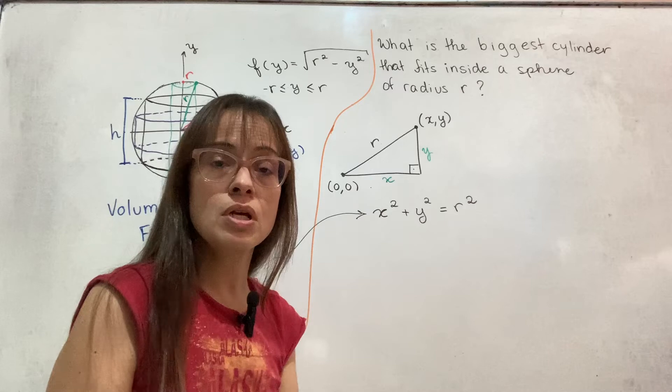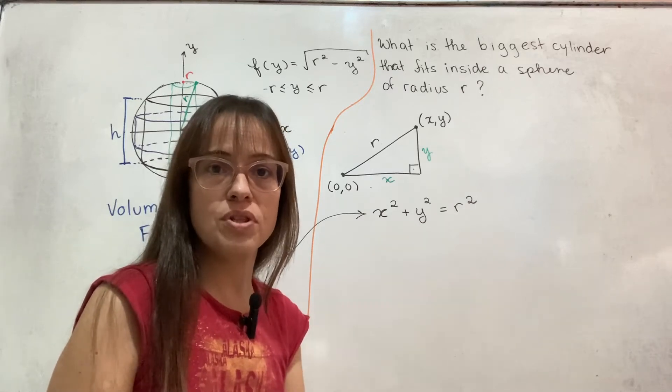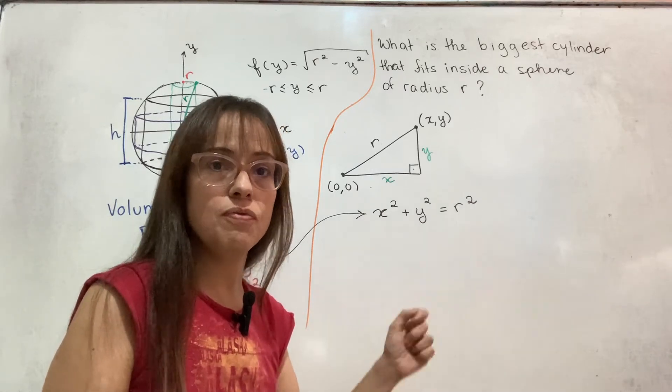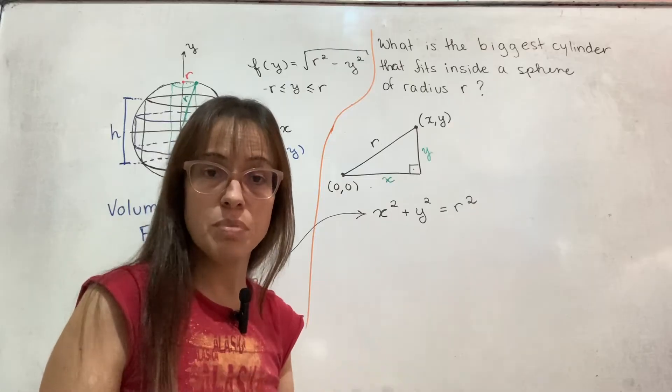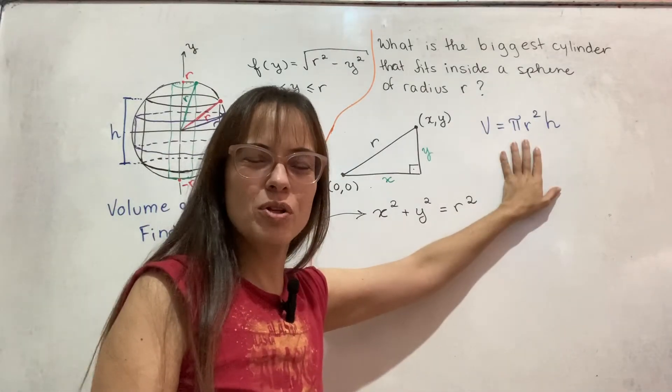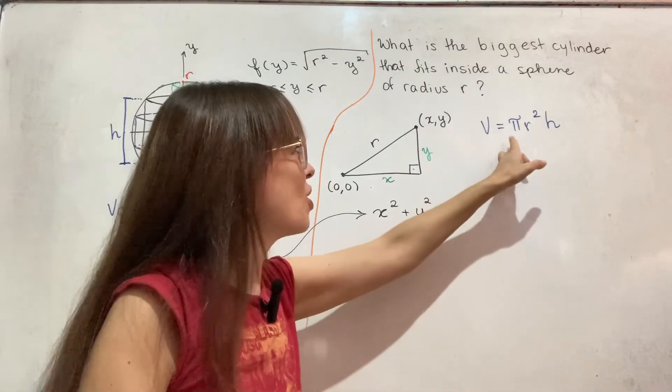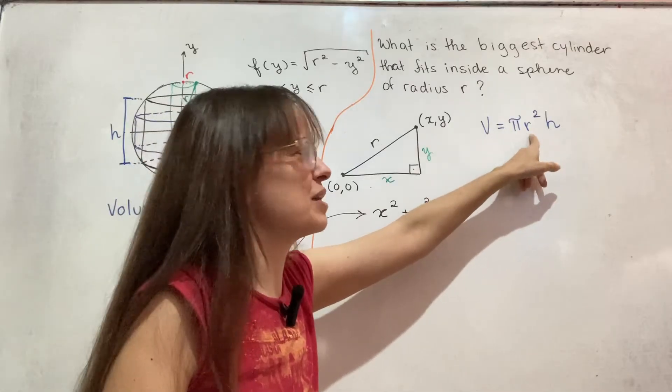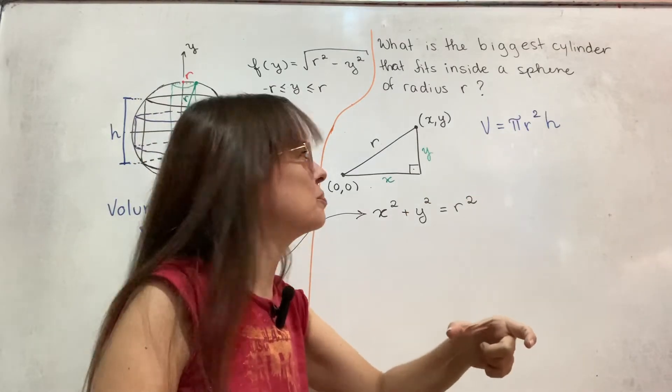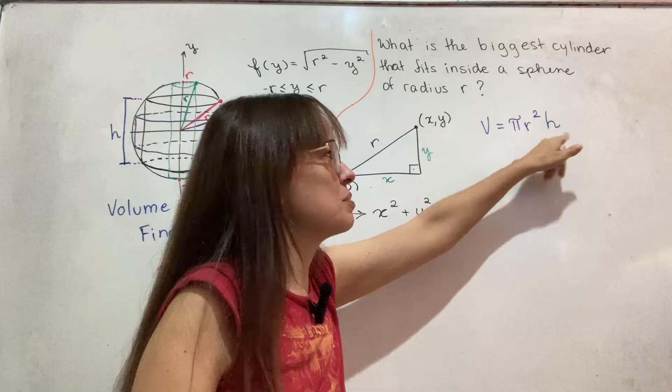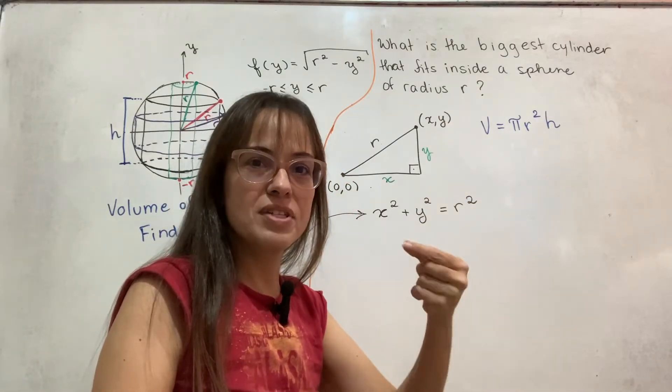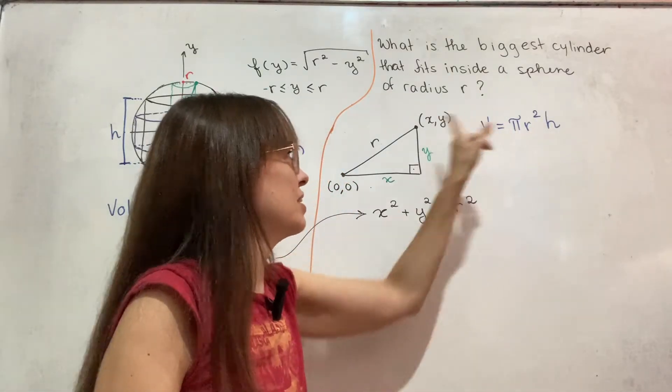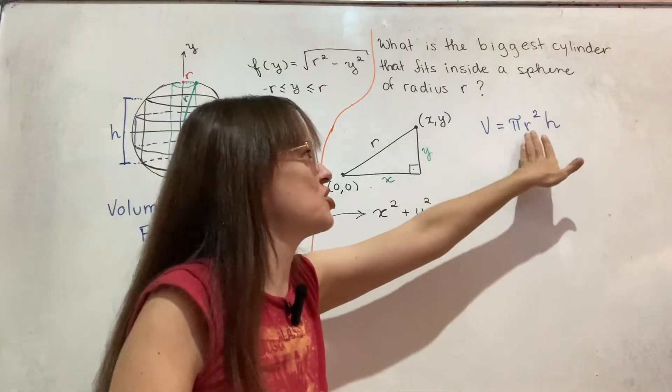And then the hypotenuse is R. And the other vertex up here, I'm just going to call it generically X, Y, because I don't know which angle I'm talking about, which triangle, which cylinder. But what I do know is that the variables X and Y follow the equation of the circle because they are a point on that circle. And also you can see that just by Pythagoras in this triangle. You don't even have to think about a circle.